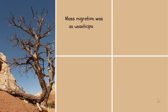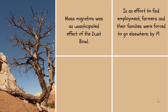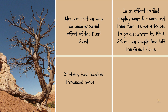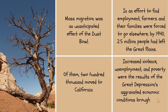Mass migration was an unanticipated effect of the Dust Bowl. In an effort to find employment, farmers and their families were forced to go elsewhere. By 1940, 2.5 million people had left the Great Plains, and 200,000 of them moved to California. Increased violence, unemployment, and poverty were the results of the Great Depression's aggravated economic conditions brought on by the migrant wave.